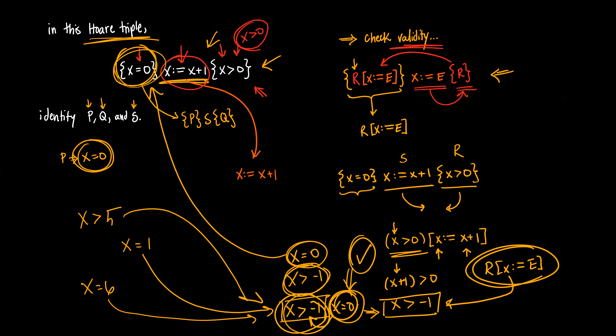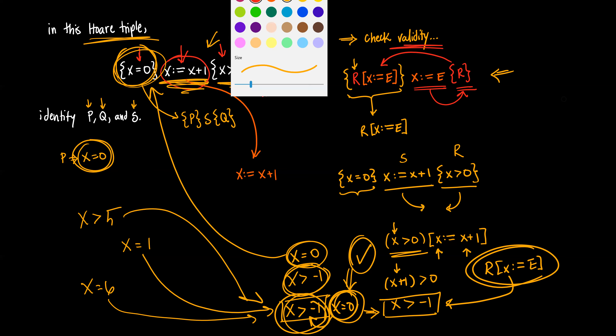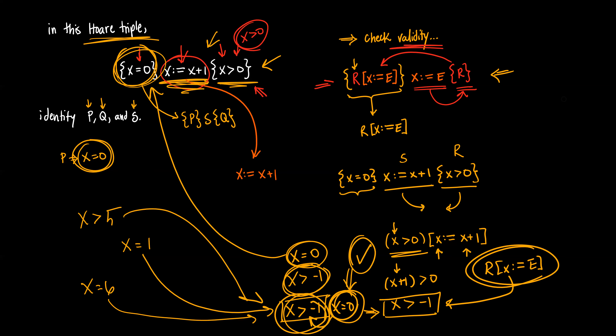There are usually multiple preconditions that will satisfy a Hoare triple using a given assignment statement and postcondition. So the question a lot of people have is: why is this the case? Why do we take the postcondition and perform the assignment statement on it, instead of starting with the precondition and calculating the postcondition that way? Why do we calculate the precondition from the postcondition?